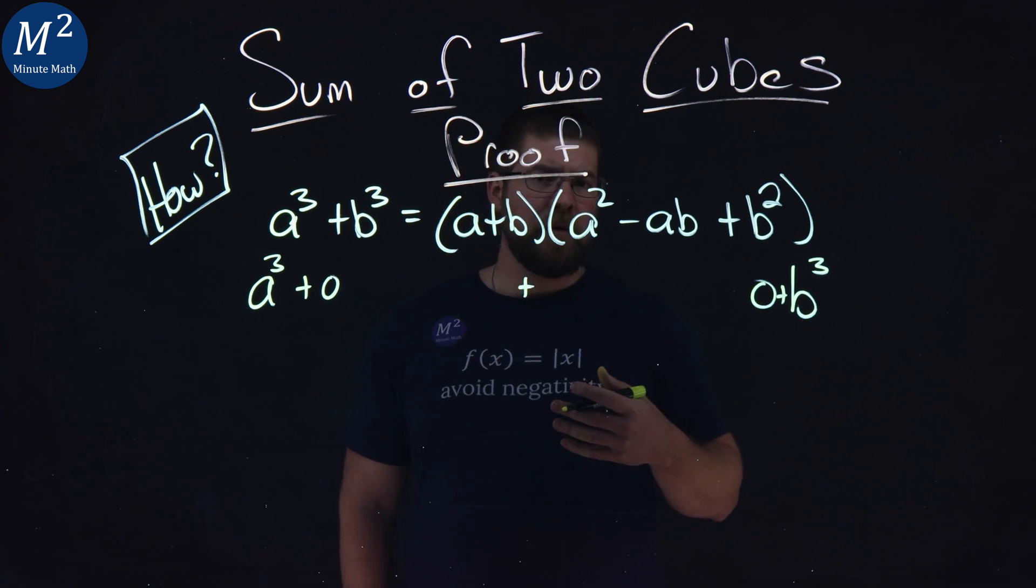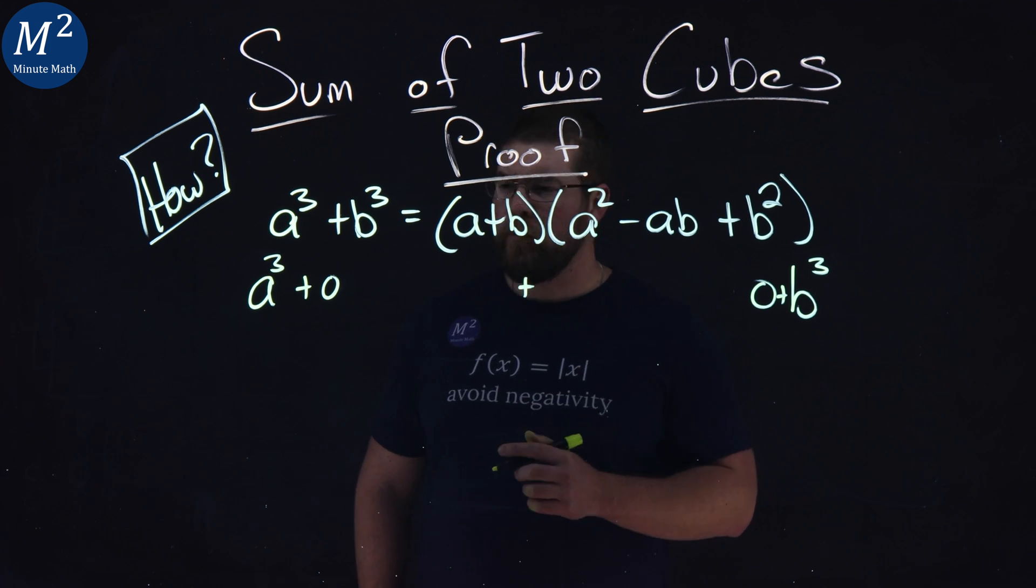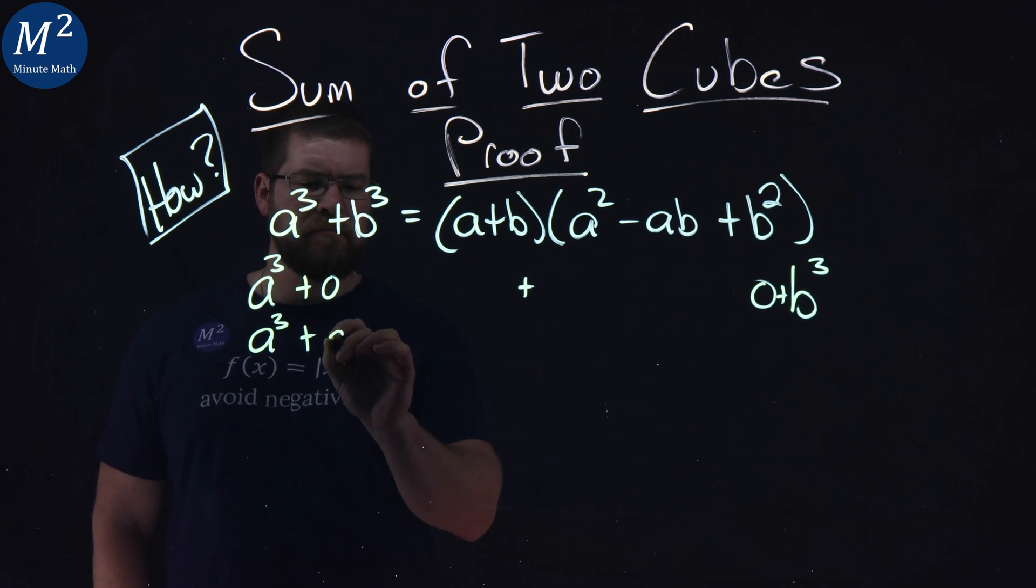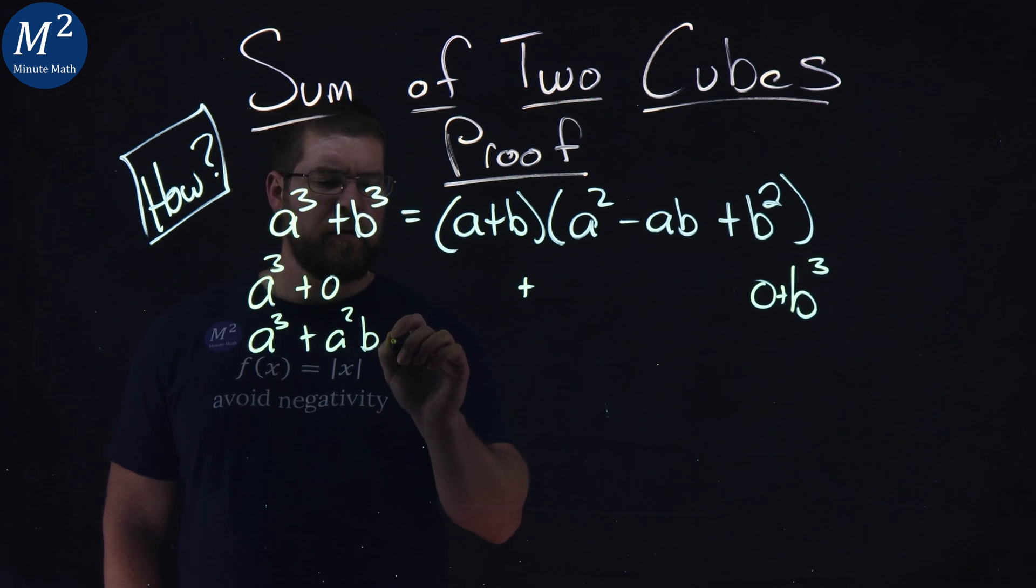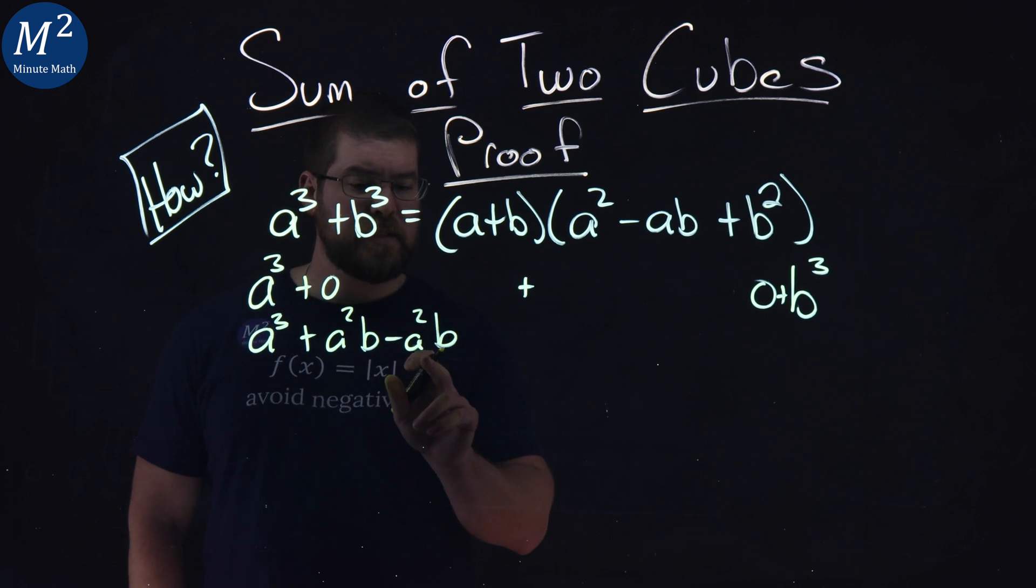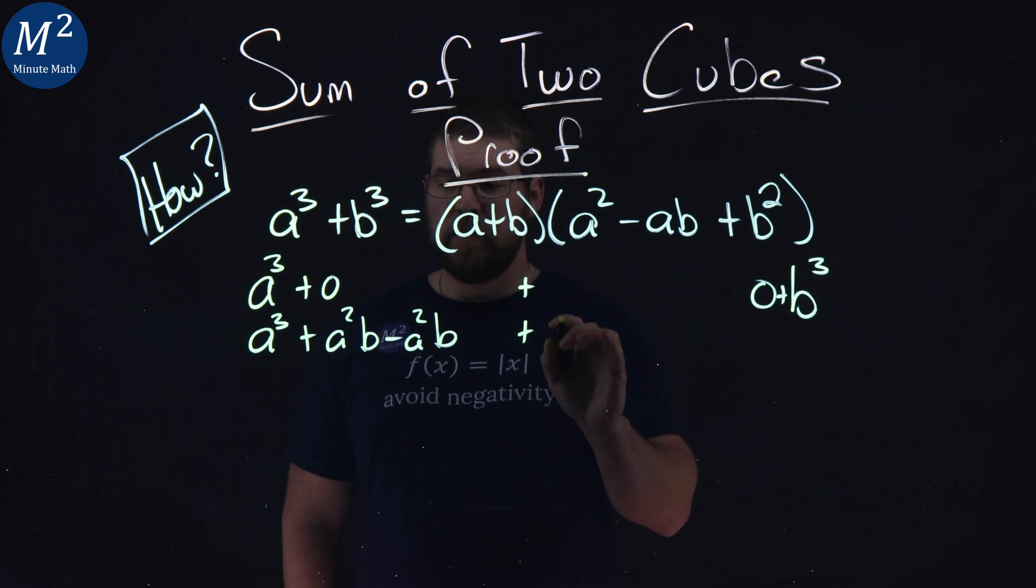But we know that a number minus itself is also zero. So if I rewrite this, I have a cubed plus a squared b minus a squared b, that's still a zero, right? A squared b minus a squared b, plus here.